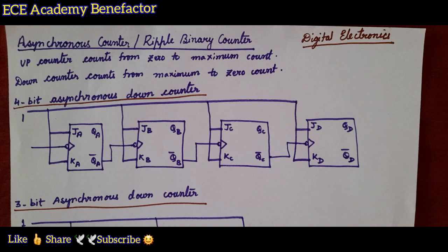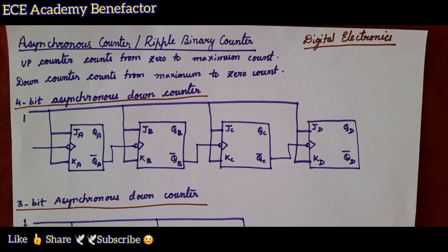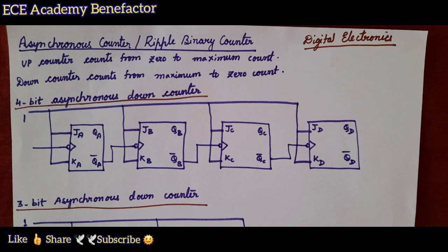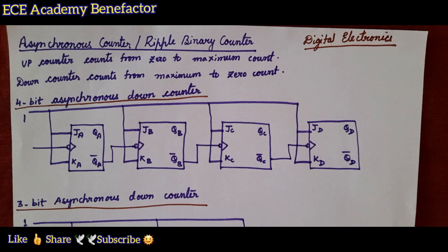In our previous class we have seen the up counter. What is an up counter? Up counter counts from 0 to maximum count, and down counter counts from maximum to 0. In this class we will be seeing the down counter.